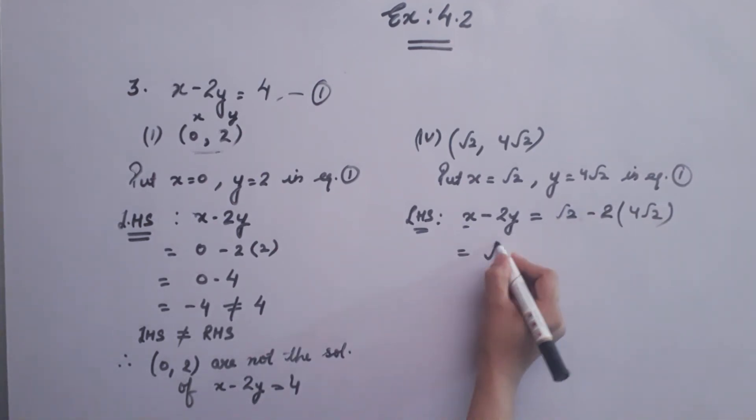Now, simplify it. root 2 minus 2 times 4 times root 2, that is root 2 minus 8 root 2, which equals minus 7 root 2.